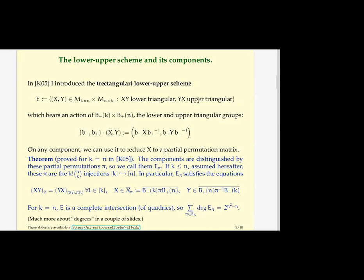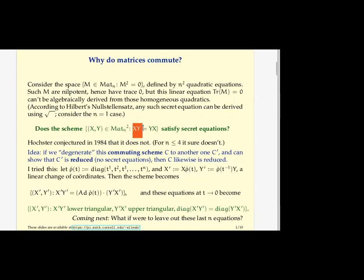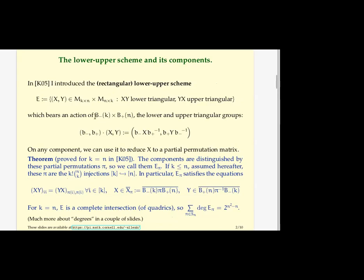So this is pairs of matrices where I only imposed the first two groups of equations. I didn't say anything about how the diagonals relate. And this doesn't have the GLN action we had before. But there is an action of this group, which is worse than GLN because it's solvable, but better than GLN because it's bigger. It's actually got twice the dimension of torus in it than GLN has. So the action is very simple.